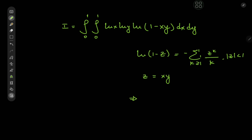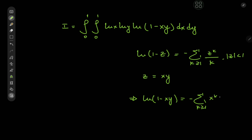So this implies that log(1 − xy) equals the negative of the sum over k of x^k times y^k divided by k.